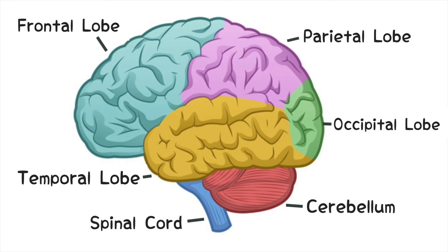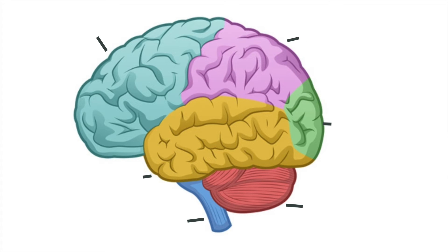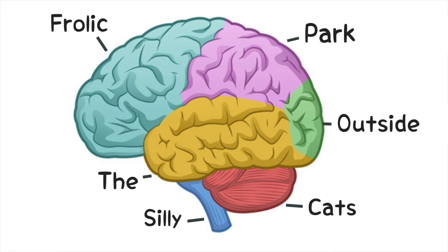The way we're going to memorize these is by using a mnemonic. Specifically, this sentence right here. Silly cats frolic outside the park.